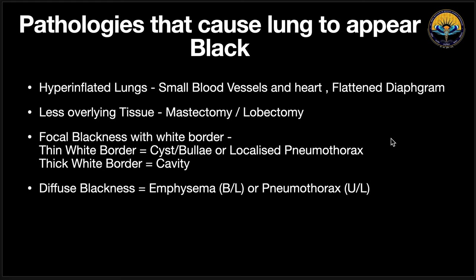Now we are going to talk about pathologies that cause the lung to appear black. This could be because the patient took a very deep breath, causing hyperinflated lungs, which compress blood vessels, making the lung appear black. Or there could be less overlying tissue, for example if the patient had a mastectomy. There could also be focal blackness with a white border: a thin white border could mean a cyst, bulla, or localized pneumothorax, while a thick wall would mean a cavity. Diffuse blackness could mean emphysema or pneumothorax.